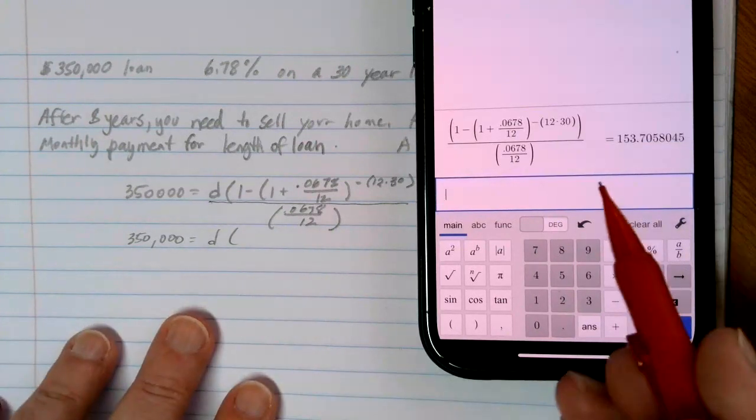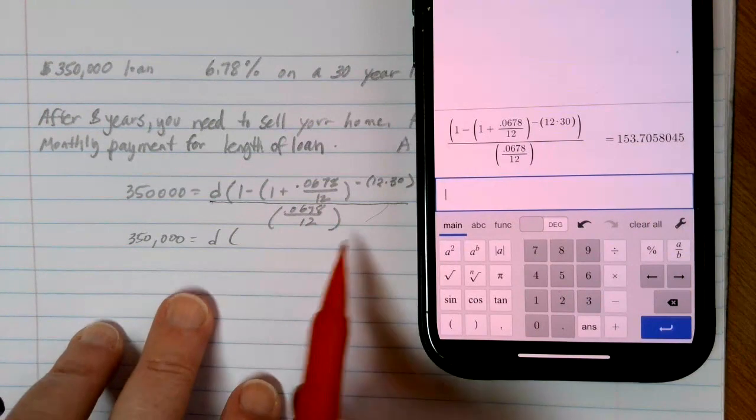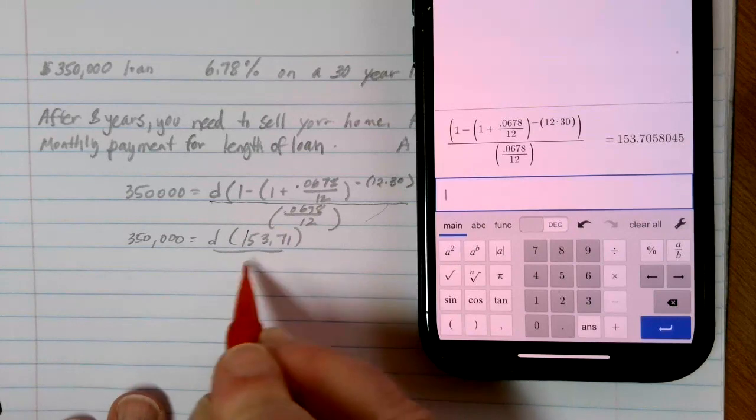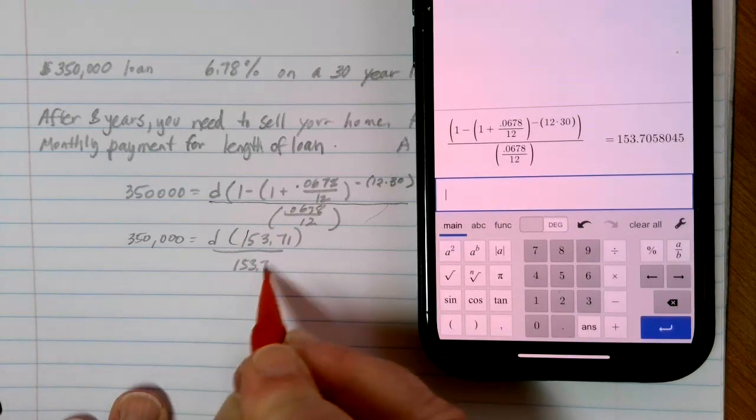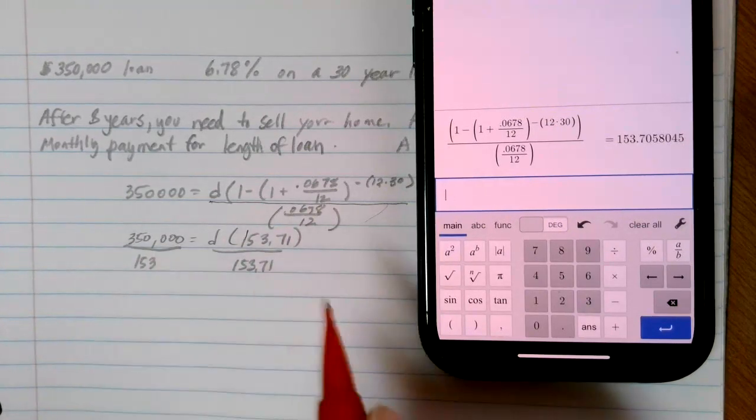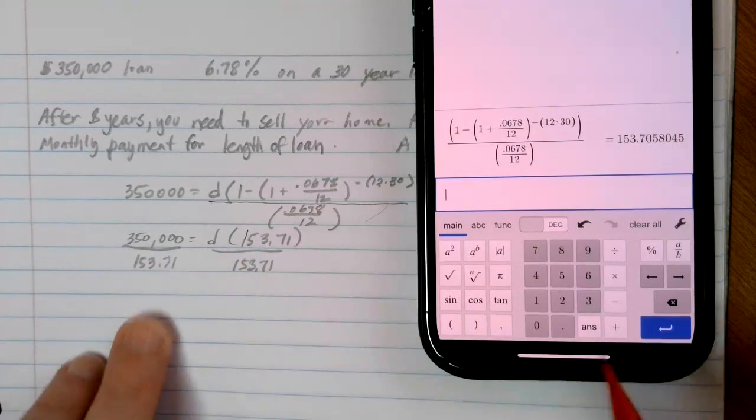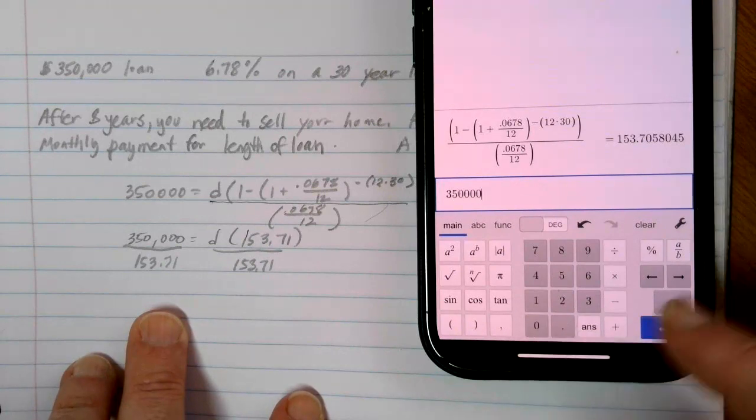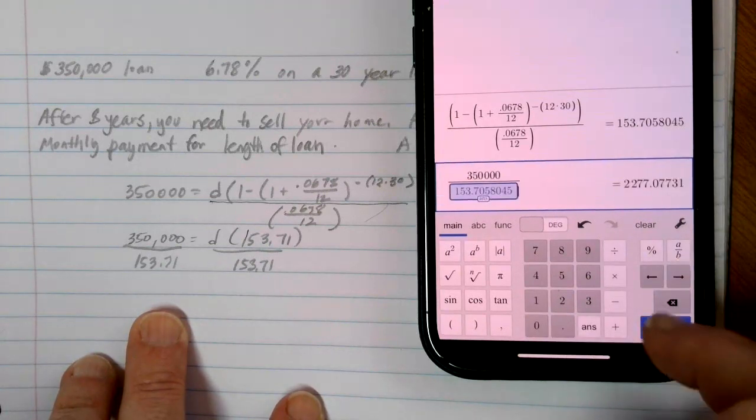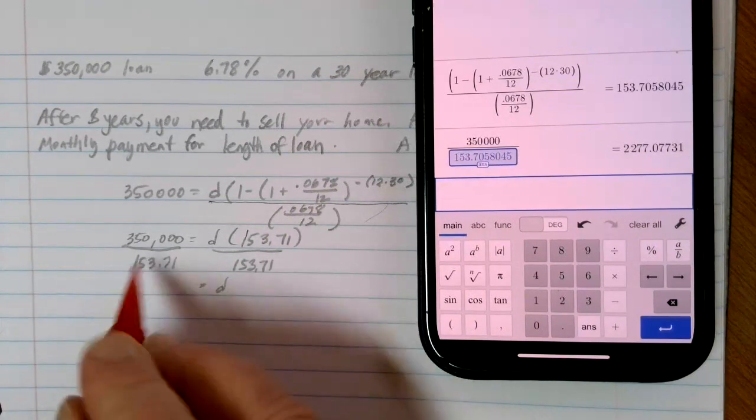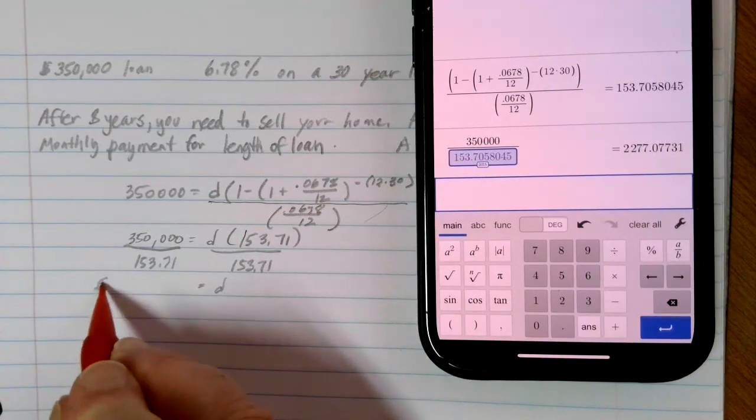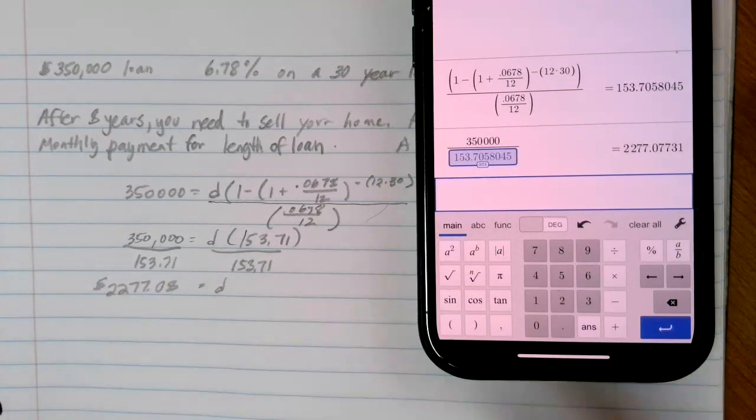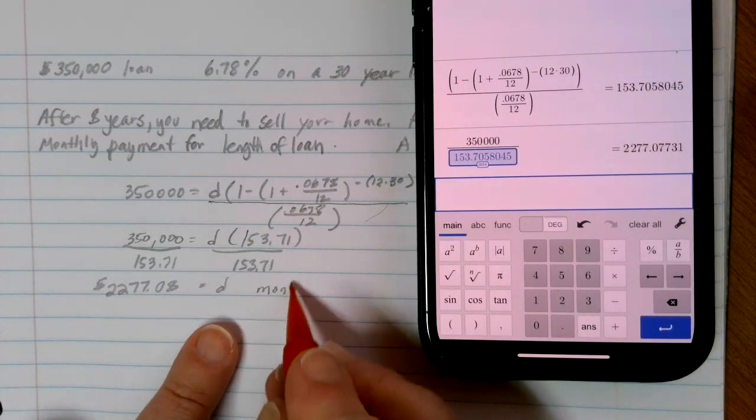Okay, so in this case, I'm able to simplify everything here on the right side of the equation down to 153.71. And if I divide by that on each side, I'll find my monthly payment for the 30 years. So I'm going to do $350,000 divided by that last answer, and I get a monthly payment of $2,277.08. So this is what I'm paying every month on my loan.